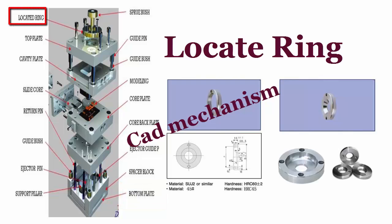Locate ring: used for positioning the injection mold on the injection molding machine, aligning the center of the nozzle and the sprue bush.